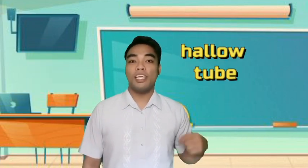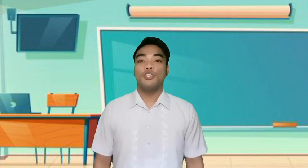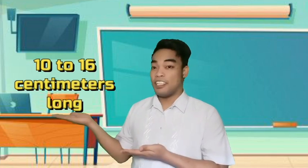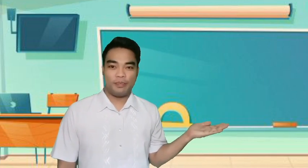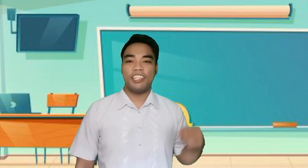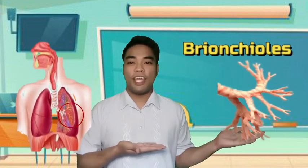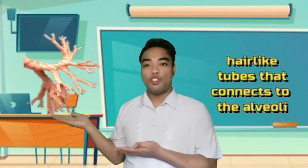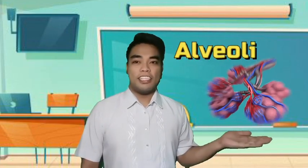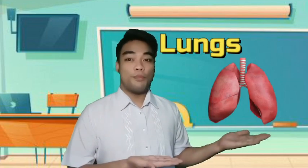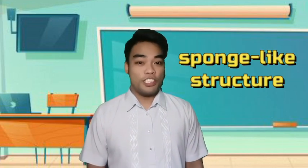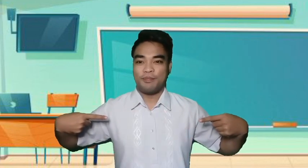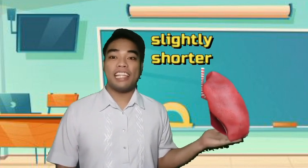The human trachea, also known as the windpipe, is a hollow tube that serves as a passage of air into the lungs. It usually measures 10 to 16 centimeters long and 25 millimeters in diameter. Bronchi are the two branching tubes that connect the trachea to the lungs. Bronchioles are the finer subdivisions of the bronchi — hair-like tubes which connect to the alveoli. Alveoli is the site where gas exchange takes place; these are the terminal ends of the bronchioles where external respiration happens. The lungs are the main organ of the respiratory system, a sponge-like structure located in our chest cavity. The left lung has two lobes and is slightly smaller in volume; the right lung has three lobes and is slightly shorter.